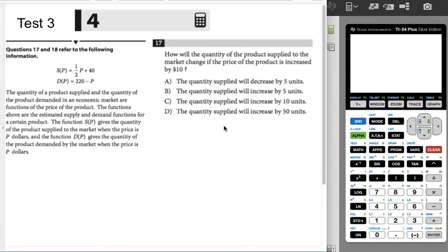So we're given a long paragraph discussing how we have two functions, one that gives the supply for a product based on its price in P dollars. So S of P is supply, and the other which gives the demand for a product, D of P, in terms of its price in P dollars.